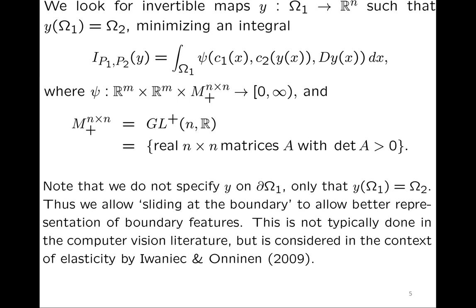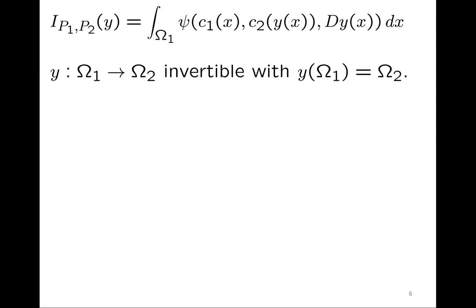Allowing sliding at the boundary should allow better representation of boundary features — for example, if a house on the edge of the first image was just shifted up a little in the second image, sliding at the boundary gives a better comparison. This is not typically done in computer vision literature but is considered in the context of elasticity.